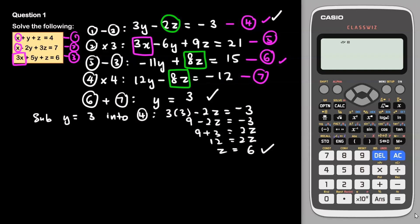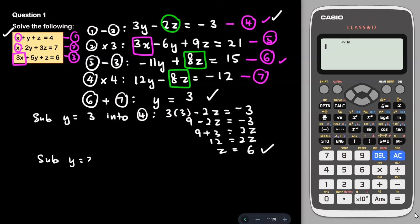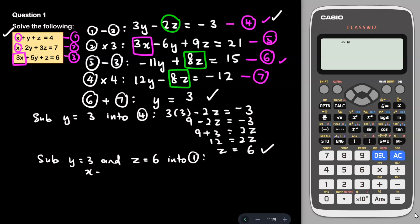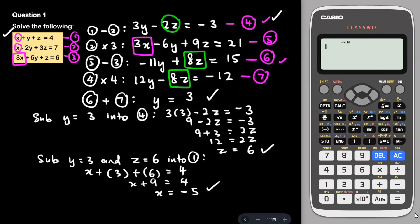Since we have y and z, we need to find x. I substitute y = 3 and z = 6 into equation 1 (the simplest equation): x + y + z = 4. So x + 3 + 6 = 4, meaning x + 9 = 4, therefore x = 4 − 9 = −5. So the final answers are: x = −5, y = 3, and z = 6.